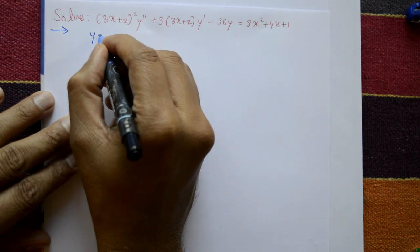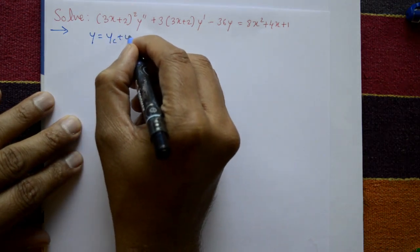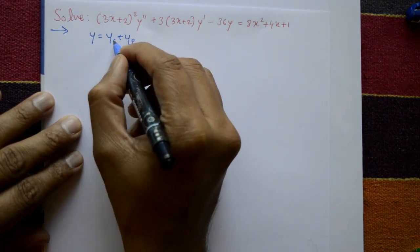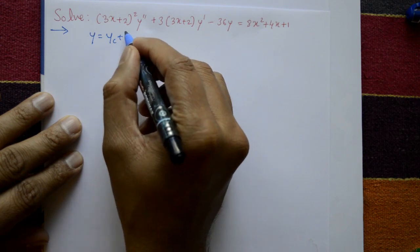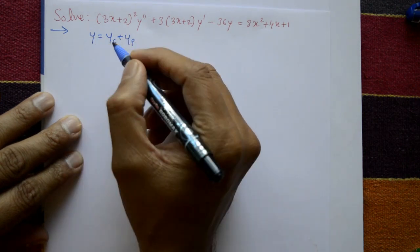Find the complete solution. The complete solution is y = yc + yp, that is complementary function plus particular integral. Add them to get the complete solution.